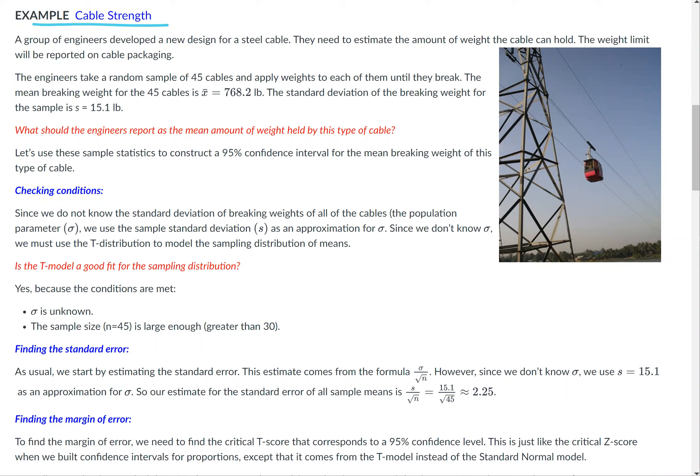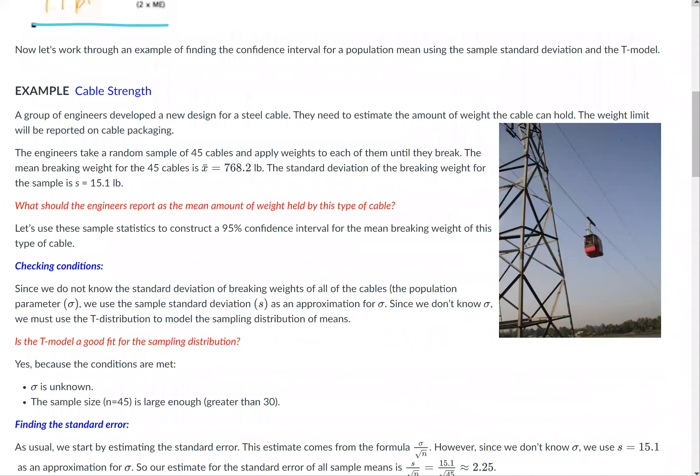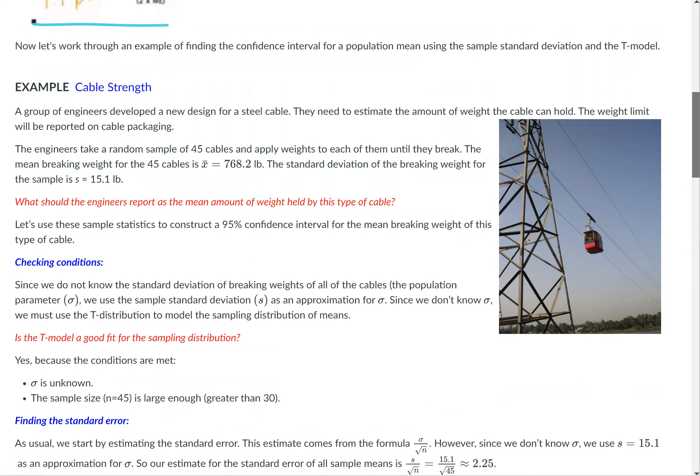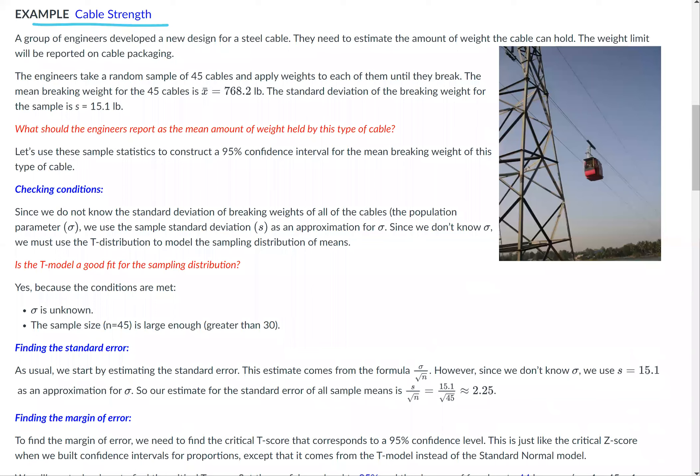Now we'll look at an example of cable strength. We're going to work with an example of finding the confidence level for a population mean using the sample standard deviation for the t-model. A group of engineers developed a new design for a steel cable. They need to estimate the amount of weight the cable can hold.